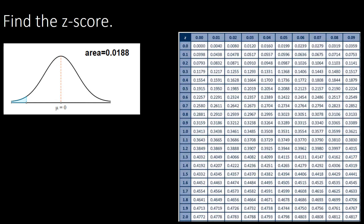This is also Case 2, so we find the area bounded by 0 to the z-score by doing 0.5 minus the given area 0.0188, which equals 0.4812. Locating 0.4812 on the z-table: first column gives 2.0 and the first row is 0.08. Since it's on the left side, the z-score is negative 2.0, and attaching last digit 8 gives negative 2.08.